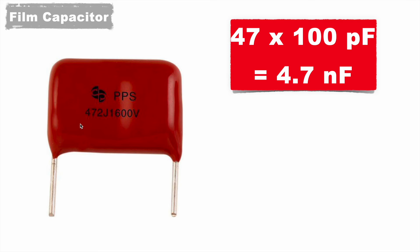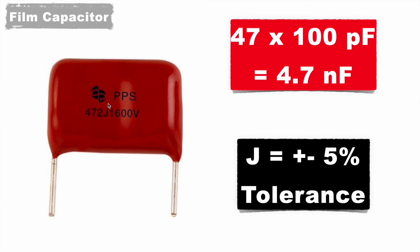We can derive like 47, the first 2 digits is the number. So 47 multiplied with 10 to the power 2. So 100 we have to multiply with. It comes to 4700 pF or 4.7nF. And this capacitor can work till maximum of 1600V of power supply. And the letter J tells that it has plus minus 5% tolerance.